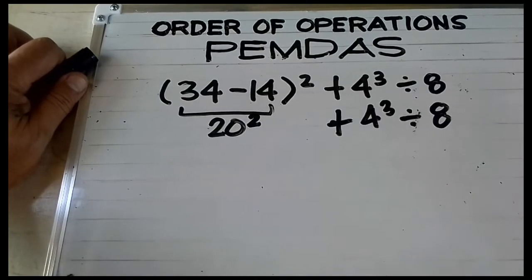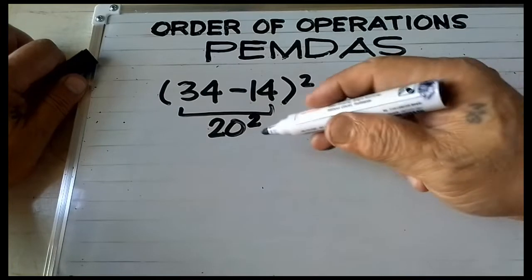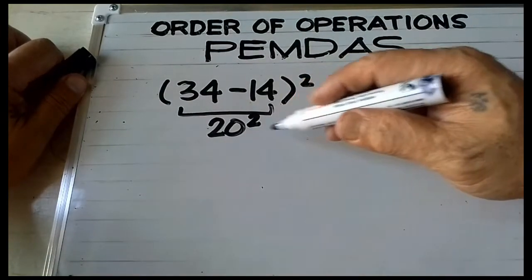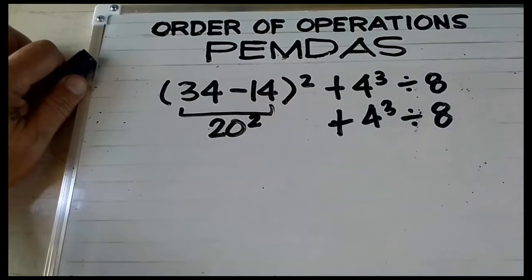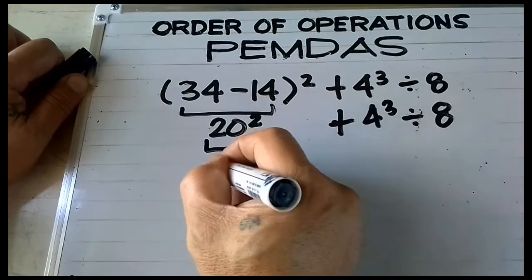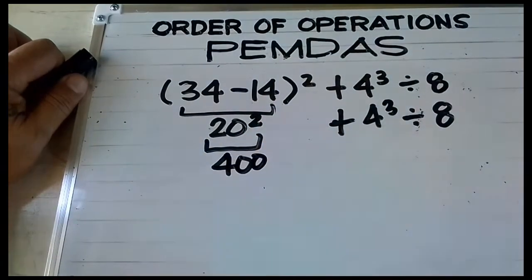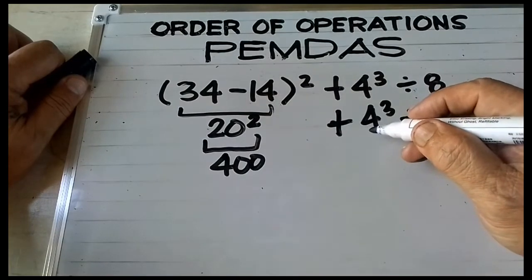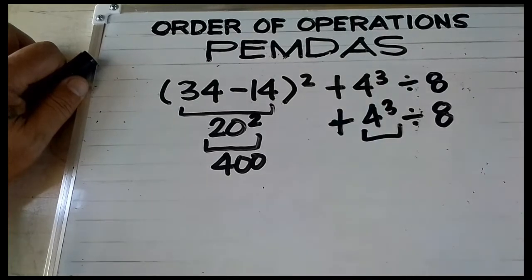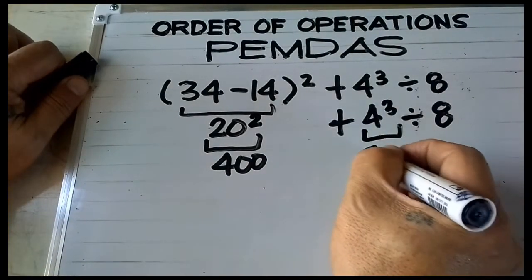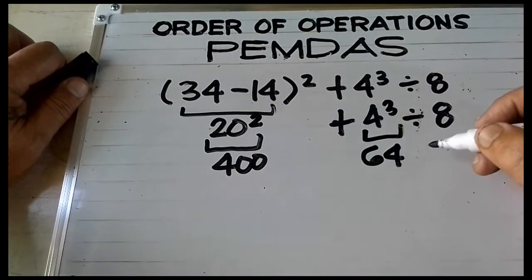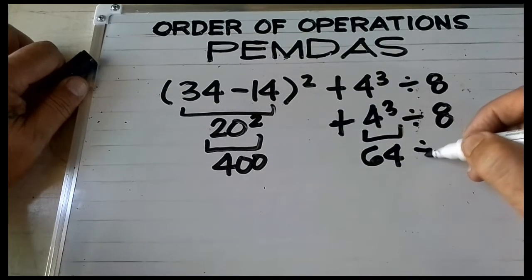Next, do we have exponents? Yes, two of them: 20 squared and 4 cubed. So 20 times 20 is equal to 400. And 4 times 4 times 4 is equal to 64.